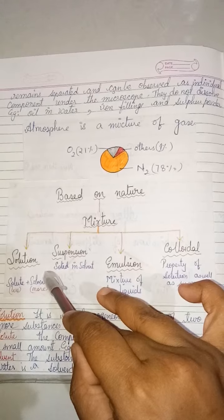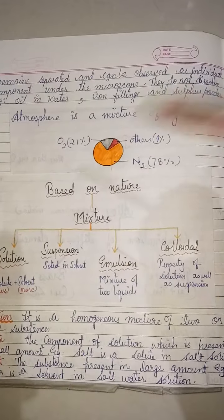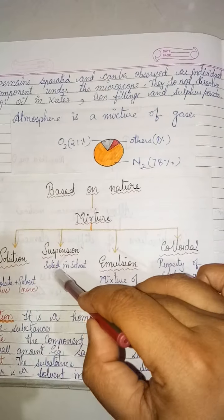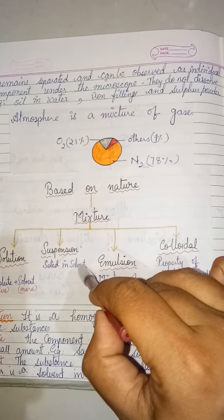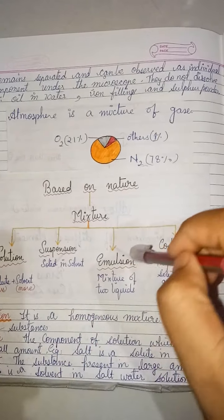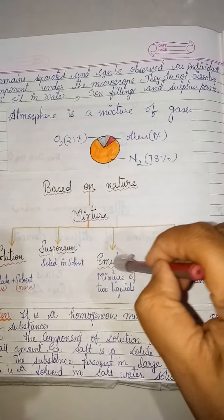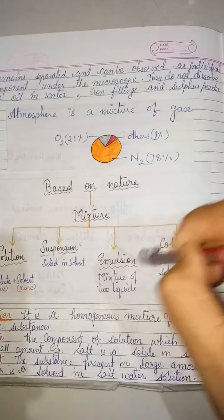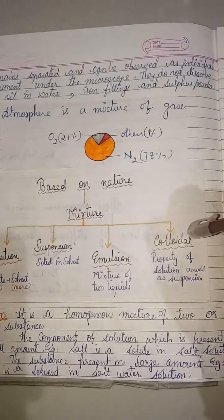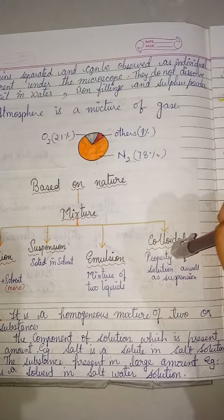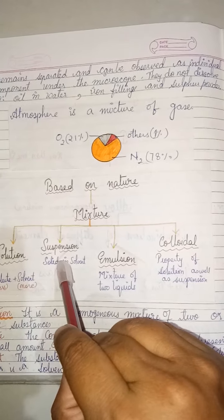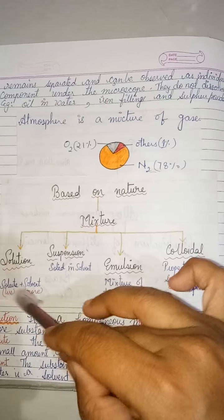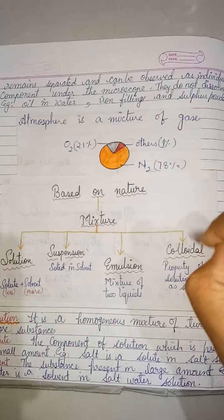Suspension is a mixture of a solid in a liquid (insoluble solute in liquid). Emulsion is a mixture of two liquids. Colloids have properties of both solution and suspension. Let us study all these in detail.